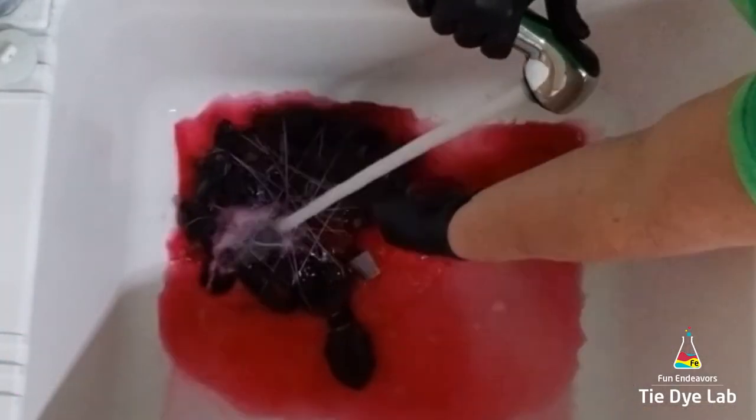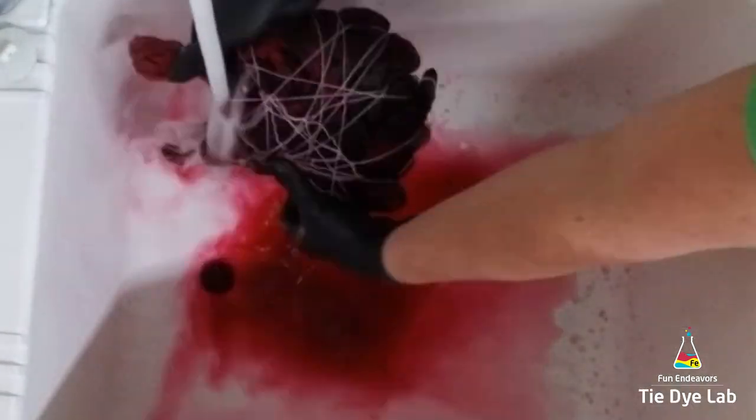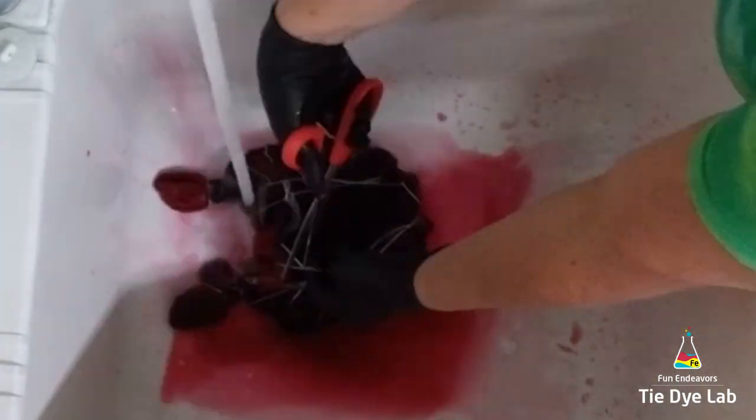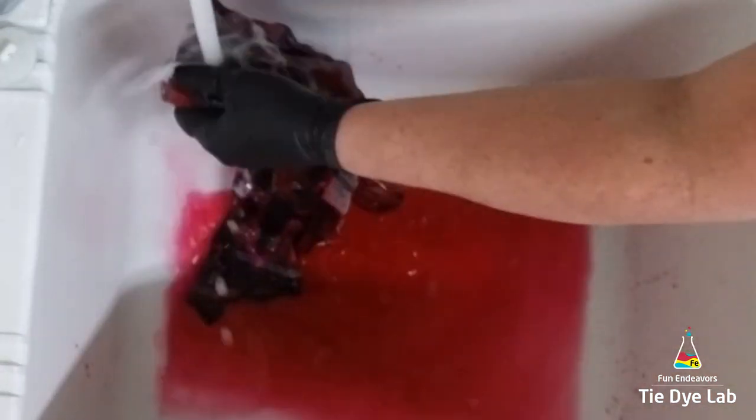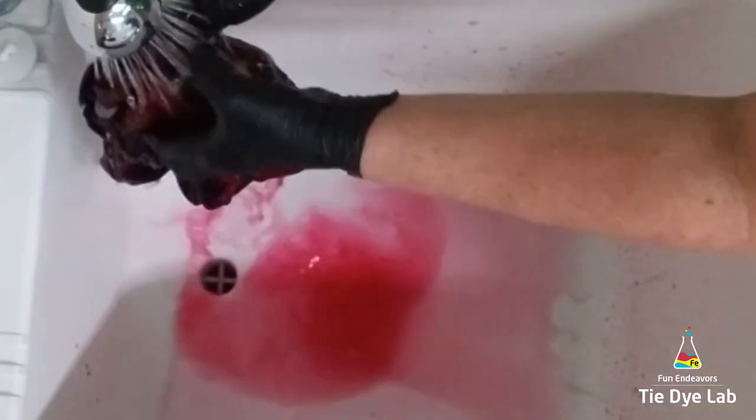After 24 hours, I began rinsing the shirt in cold water to get out any of the excess soda ash that remained in the shirt. Then I gradually warmed the water up to hot and continued rinsing to get out any of the dye that didn't bond with the shirt.